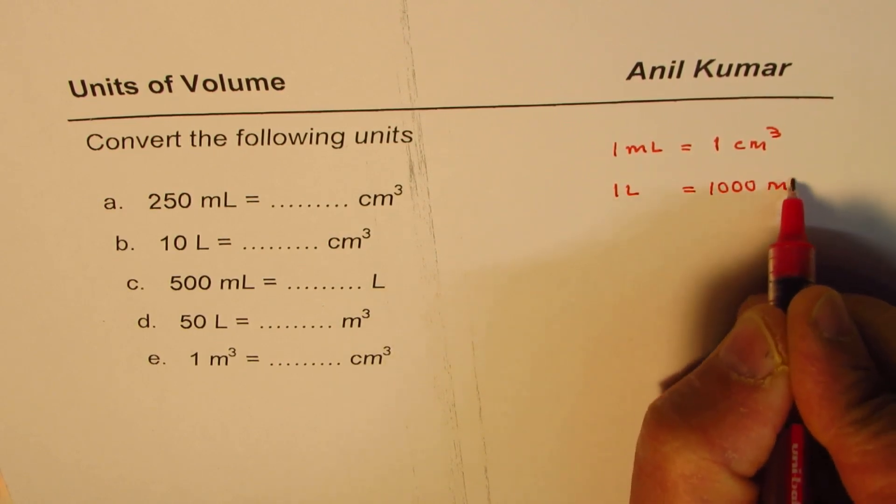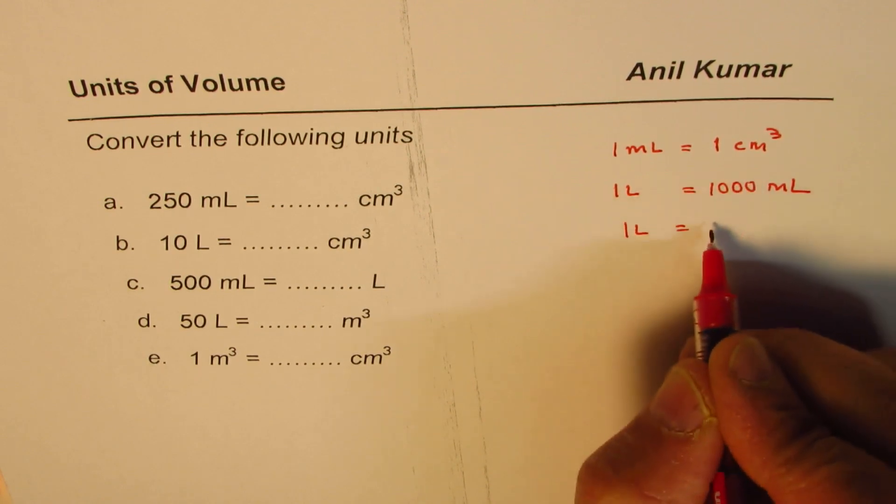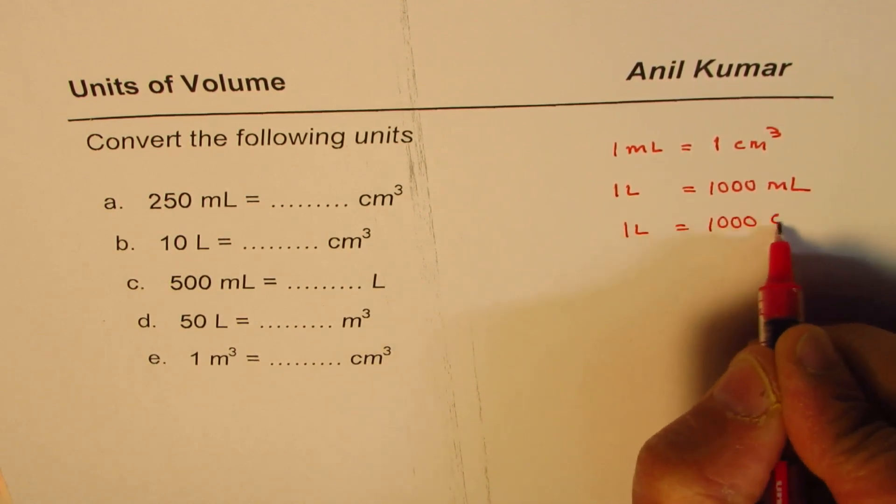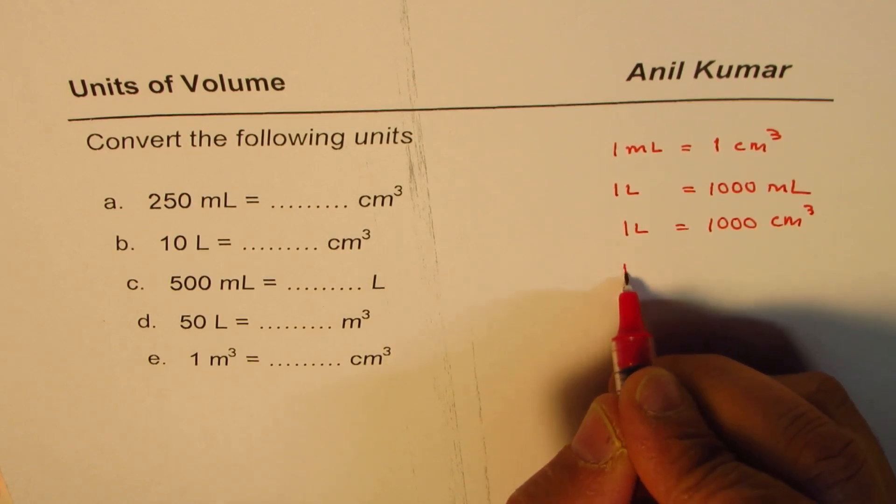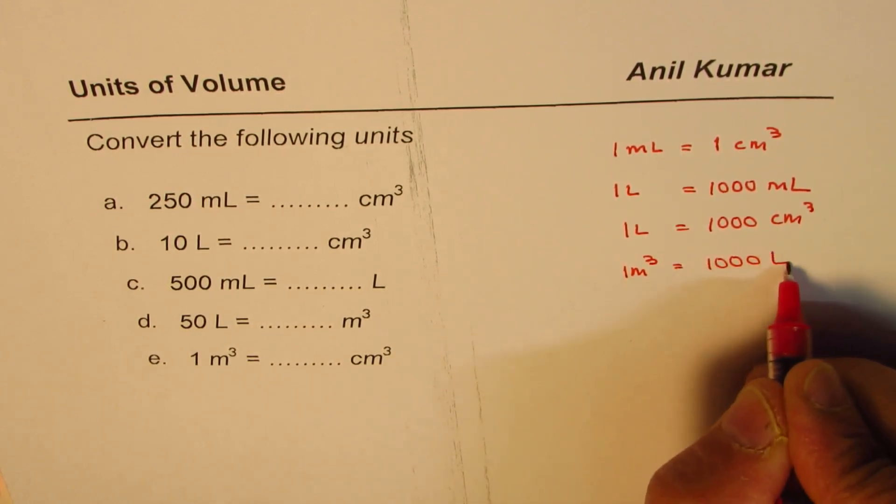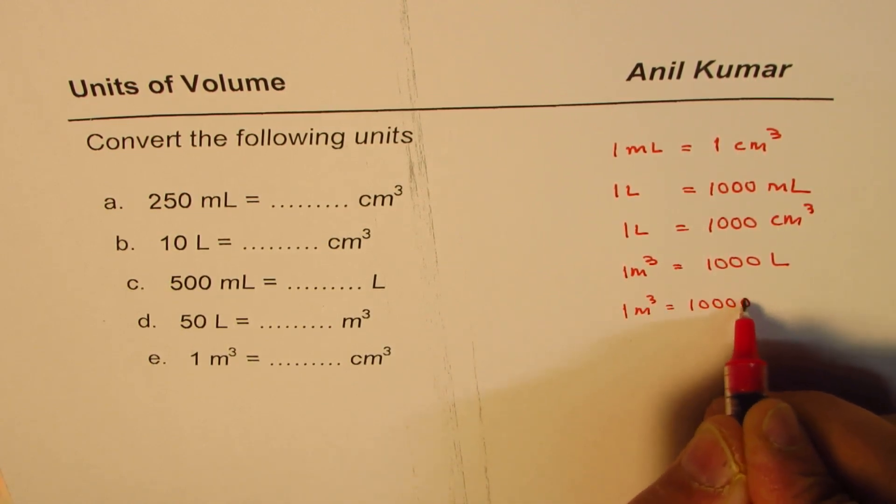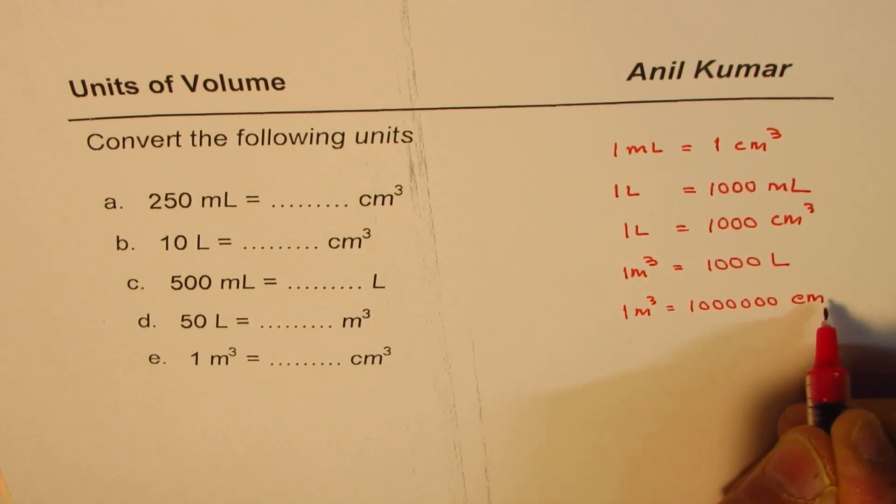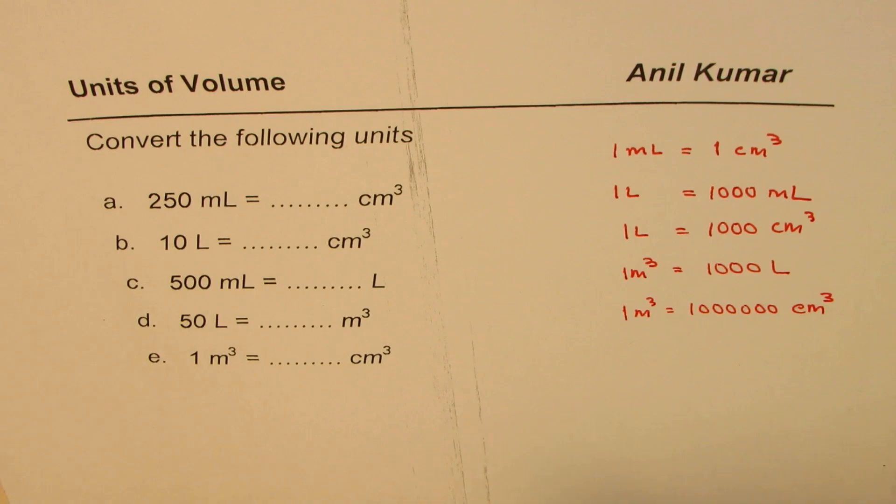One liter is 1000 milliliters and therefore one liter is 1000 centimeter cubed. On the other hand, one meter cubed is 1000 liters, and one meter cubed will be one million centimeter cubed. So that is the relation between these units.